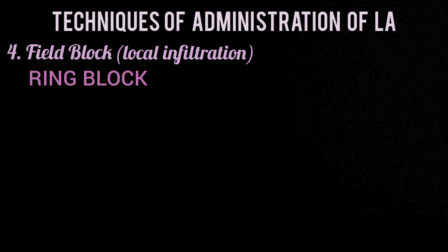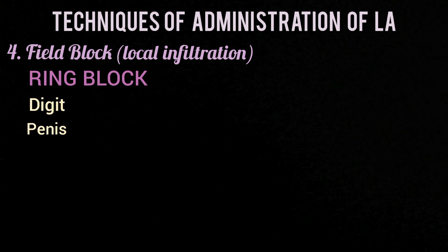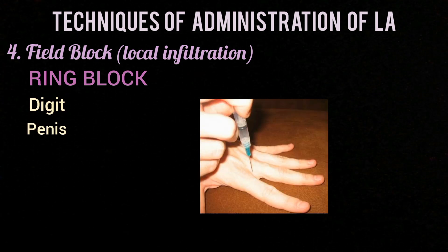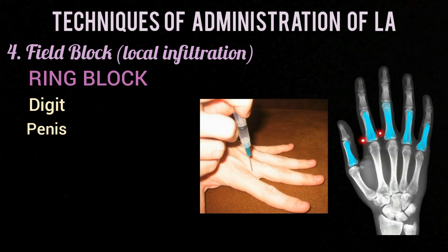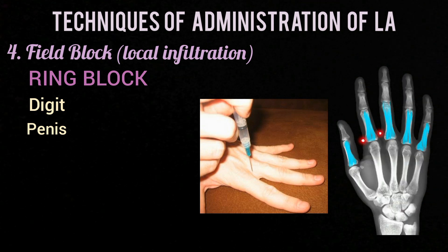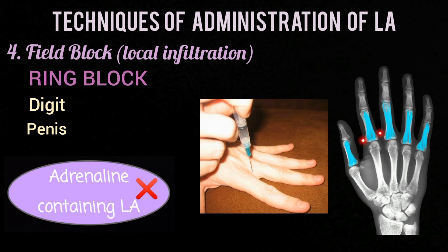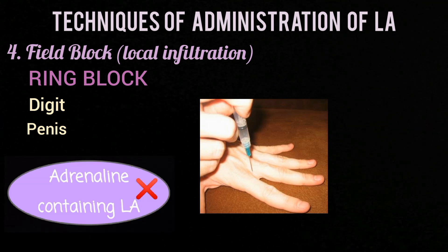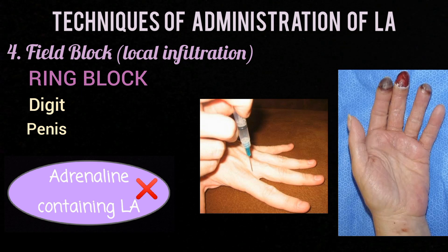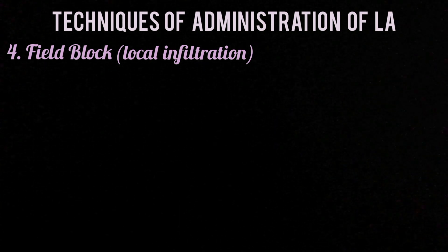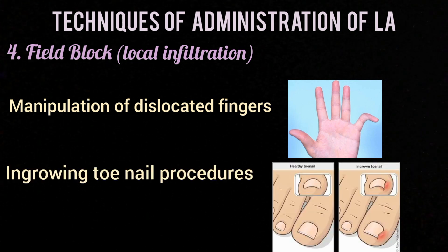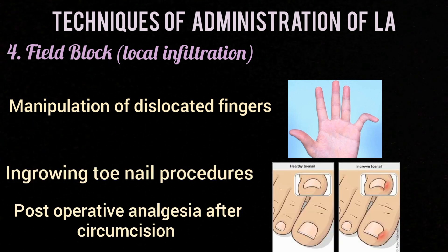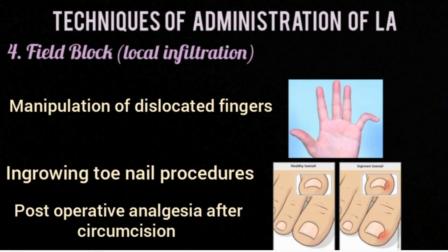A type of field block is ring block, used when the area to be blocked is a digit or the penis. For a digit, the block is achieved by injecting local anesthetic on either side of the proximal phalanx at the level of the web space. Adrenaline-containing local anesthetic must never be used in digits or the penis as it may cause ischemic necrosis. Common uses include manipulation of dislocated fingers, ingrown toenail procedures, and postoperative analgesia after circumcision.